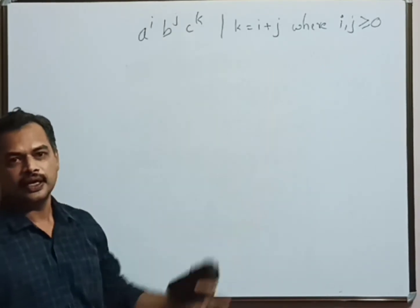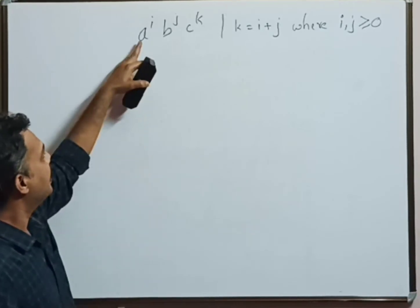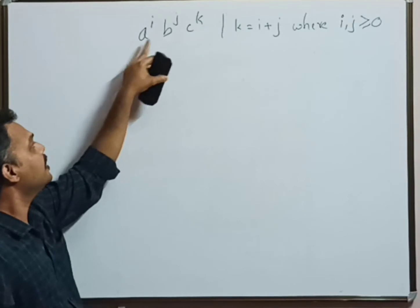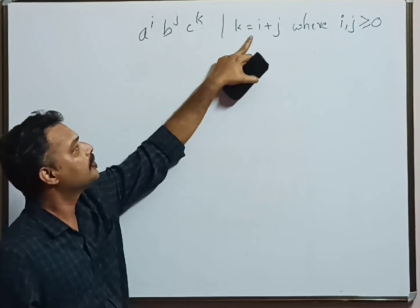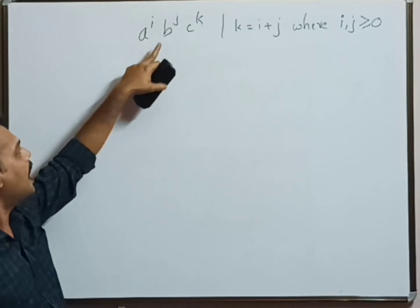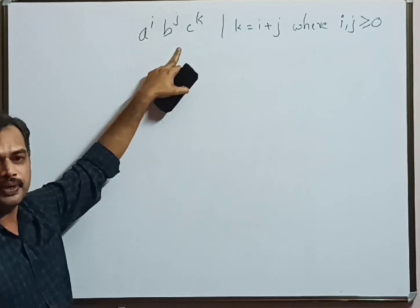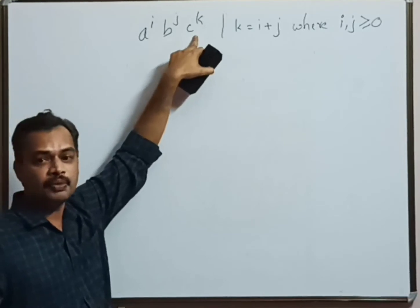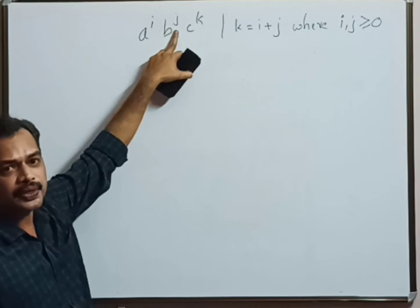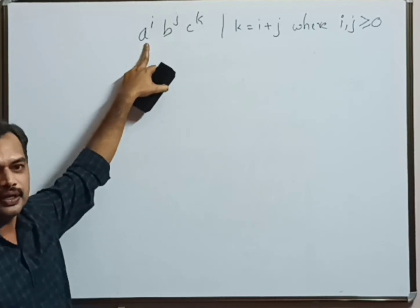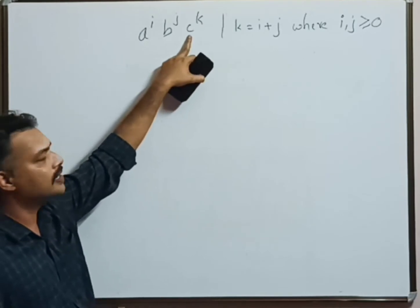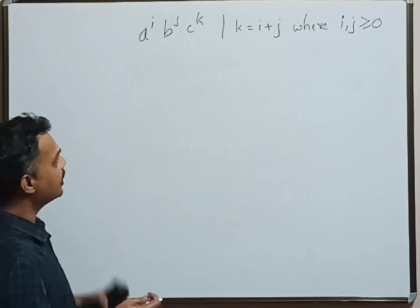That means i and j may or may not be there. If i and j are not there, c will not be there because c is nothing but i plus j. There can be a possibility that i can be zero and j can be there, so based on that, c's number of occurrences will be determined. There can also be a possibility that j may not be there and i can be any positive number.